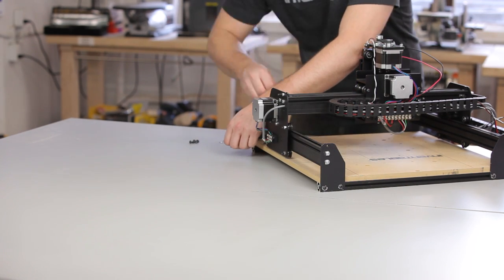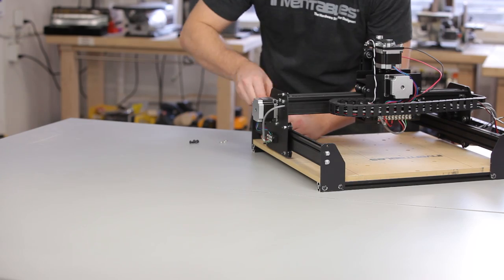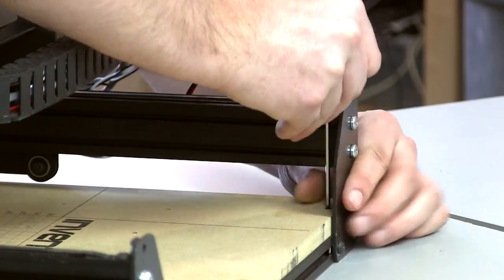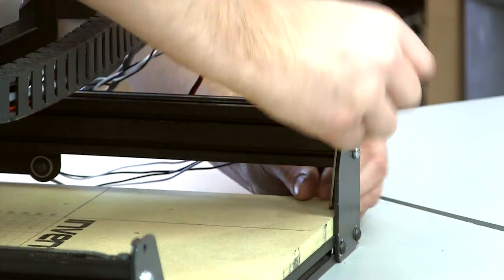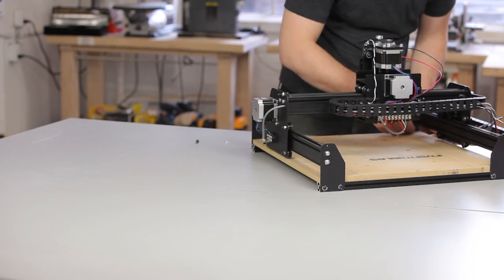Then you're going to put two screws through the holes on the waste board and screw them into the insertion nuts. Keep them a little loose so you can slide the waste board around.